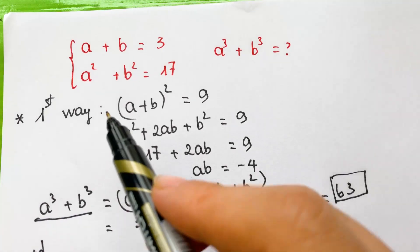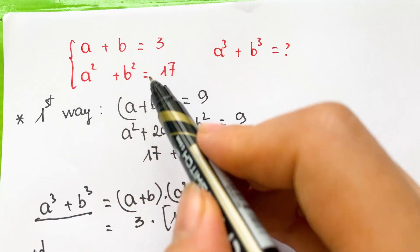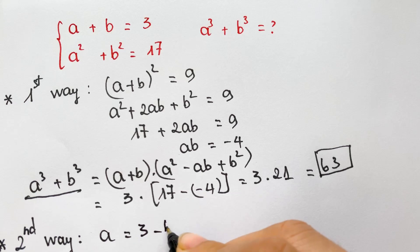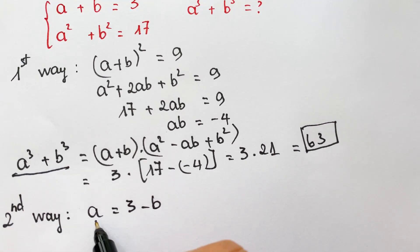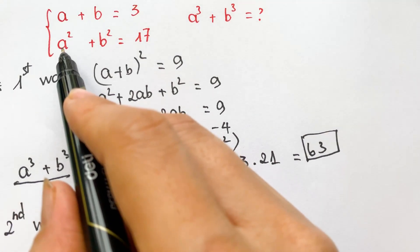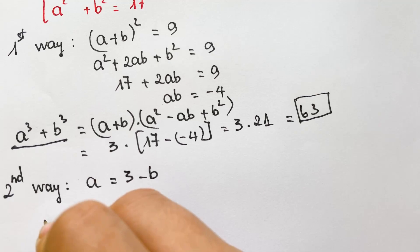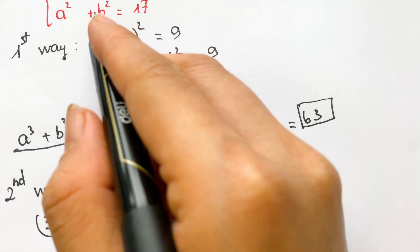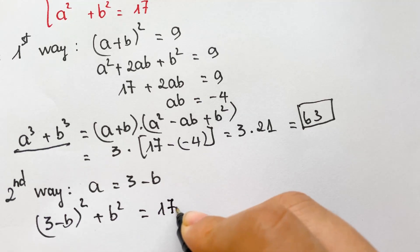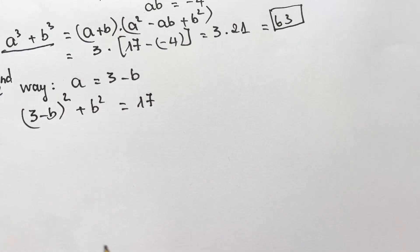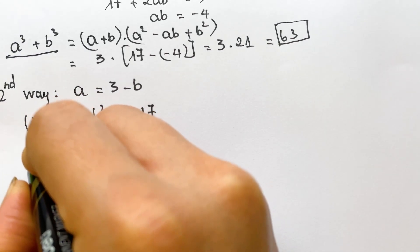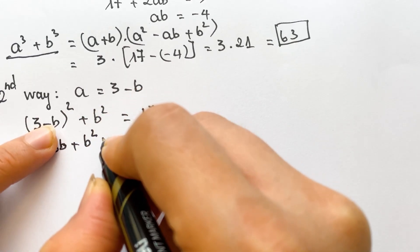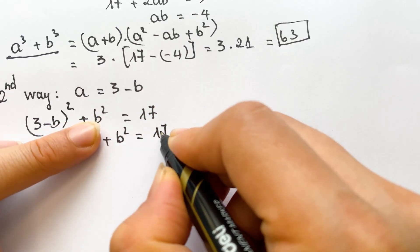Now for the second way, we can find a or b from this equation. We can find a: a equals 3 minus b. And then we can replace a here in the equation. So we can have 3 minus b whole power squared plus b squared is equal to 17. And so we can have 9 minus 6b plus b squared plus b squared is equal to 17.